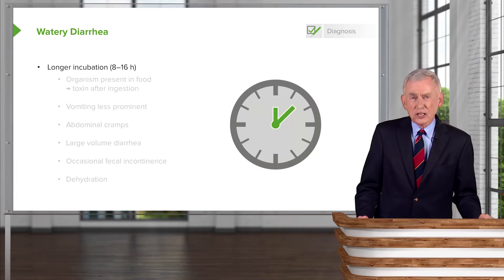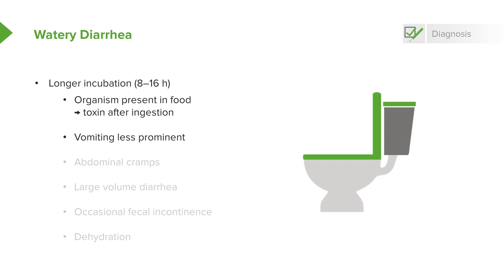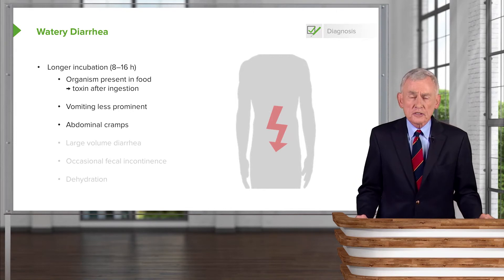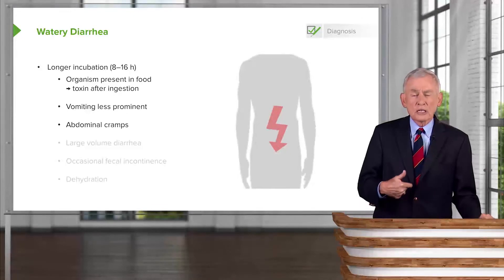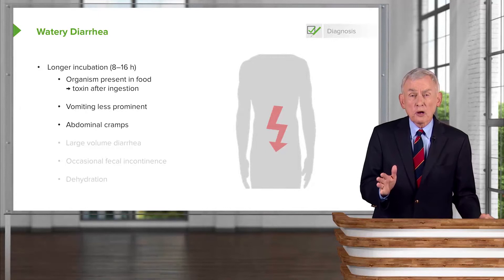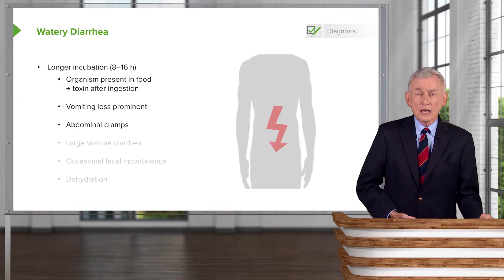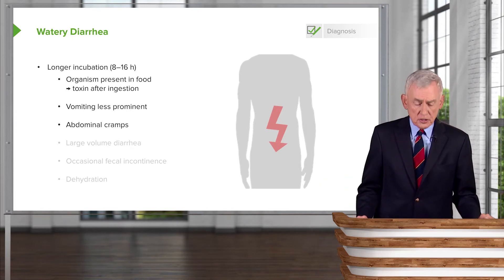There is also a longer incubation form of watery diarrhea with an incubation of eight to sixteen hours. The patient ingested the organism, but it didn't make its toxin until after it got into the body. Vomiting would be less prominent and abdominal cramps quite prominent. A good physician should ask about the cramps — are they in the peri-umbilical region? If so, that points to a small bowel cause. If the cramps are below the umbilicus in the hypogastric region, that favors large bowel causes of diarrhea.